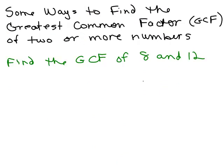I'm going to show you an easy way to find the greatest common factor of two or more numbers. First of all, the greatest common factor has the abbreviation GCF. So when you see GCF, it's referring to the greatest common factor. Before showing you the easy way to do this, I'm just going to explain what greatest common factor refers to.